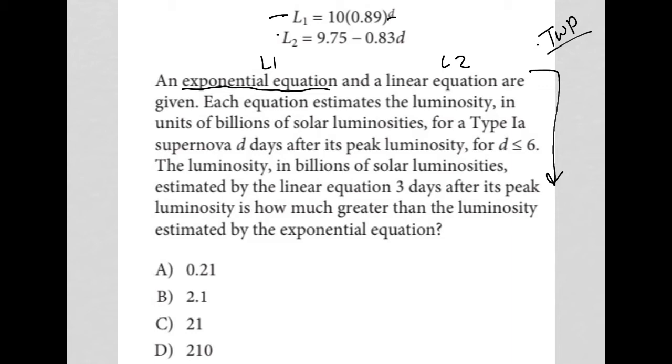For a type IA supernova, d days - that's important. D represents days after its peak luminosity for d less than or equal to 6. D has to be less than or equal to 6. That's important as well.